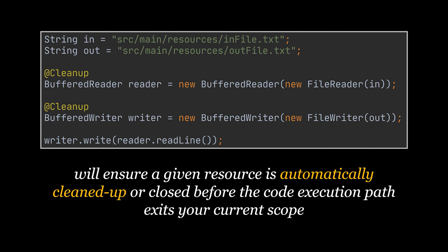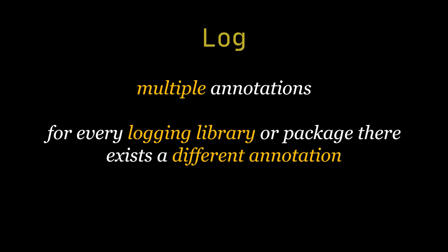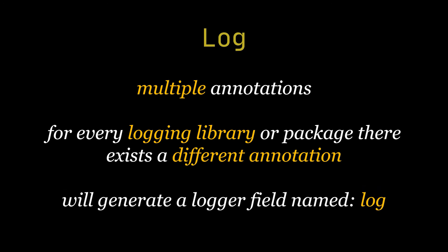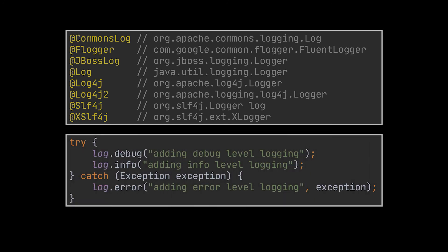The last annotation I want to cover is @Log — not a single annotation but rather multiple ones, as for every logging library there exists a different annotation in Lombok. This annotation generates a logger field named log, and its type depends on the logger selected. The list of logging annotations is pretty diverse — next to each one I've noted the corresponding package used. Be aware that loggers such as Log4j and SLF4J require an additional dependency. Note that if a field called log already exists, a warning will be emitted by Lombok and no code will be generated.